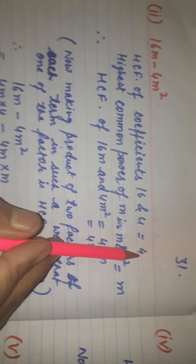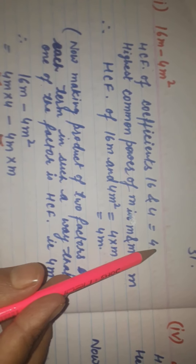The next part: a binomial 16m minus 4m² is given. First we find the HCF of the numerical coefficients 16 and 4, which is 4. The highest common power of m in m and m² is m. Therefore, the HCF is 4 times m, that is 4m.